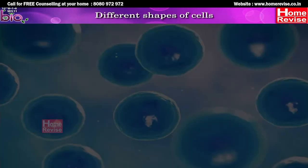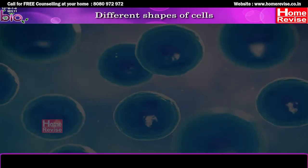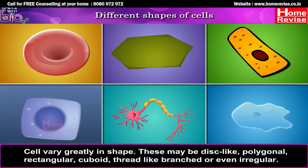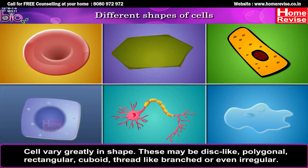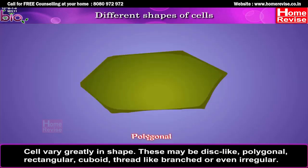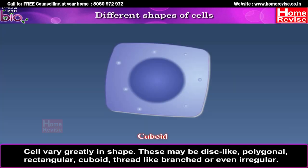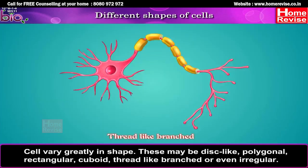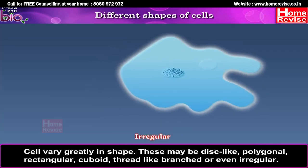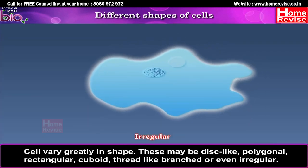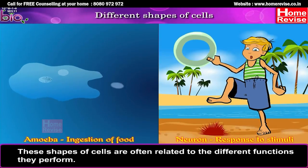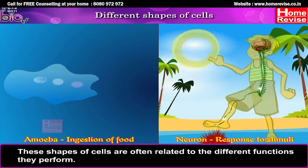Different shapes of cells: Cells vary greatly in shape. Have a look at the figure. These may be disc-like, polygonal, rectangular, cuboid, thread-like, branched, or even irregular. These shapes of cells are often related to the different functions they perform.